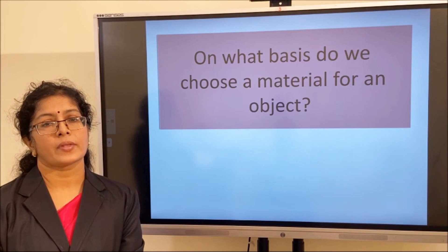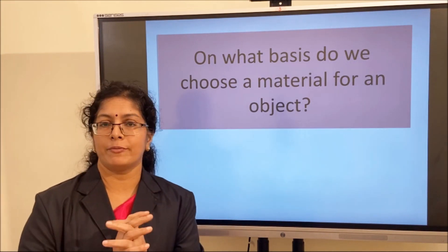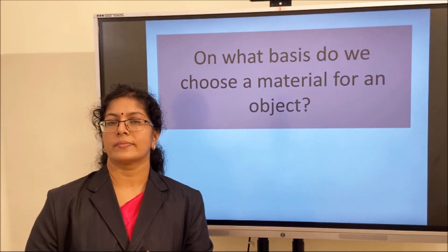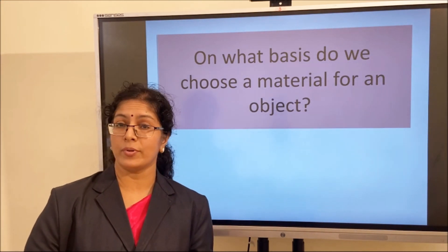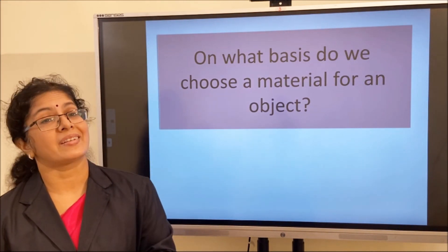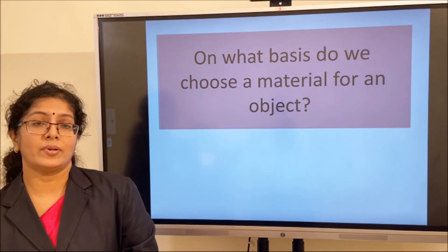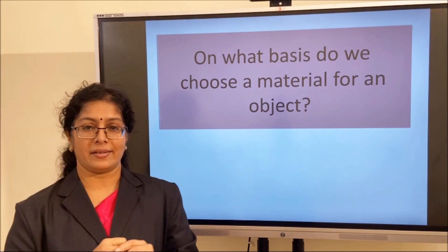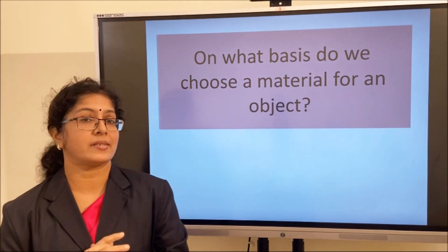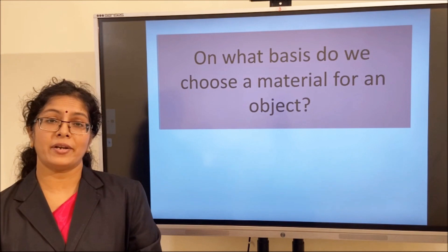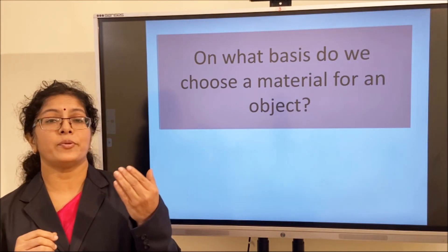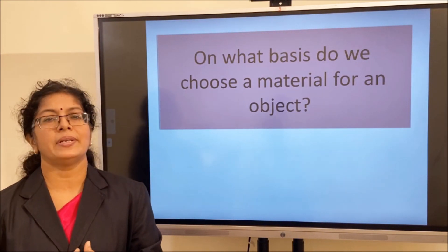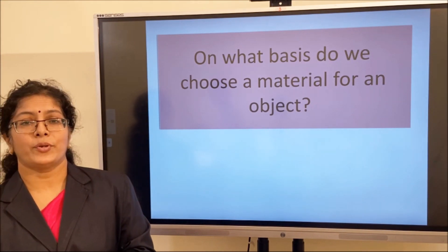Let us think about it. You all have balls. What material is used to make them? Sometimes rubber balls, sponge balls, or plastic balls — but can you see a metallic ball? Of course not. Why? Metals are hard — that is a quality of metal. If a ball is made of metal, and you kick it or throw it, you may feel pain. So metal is not suitable for making a ball.